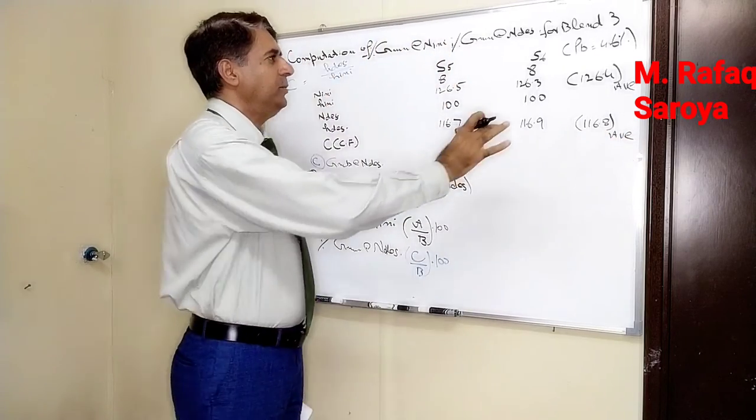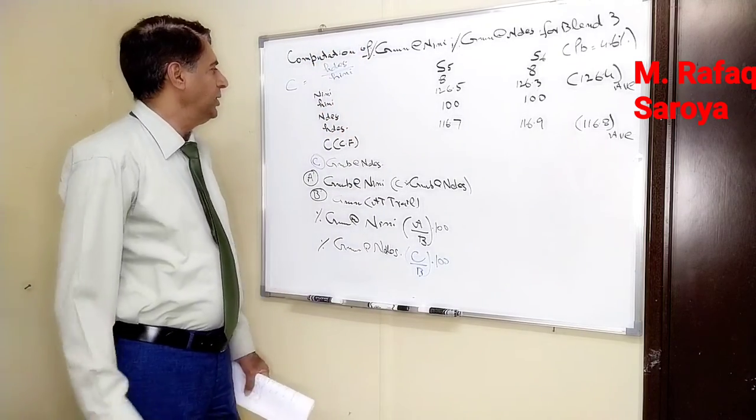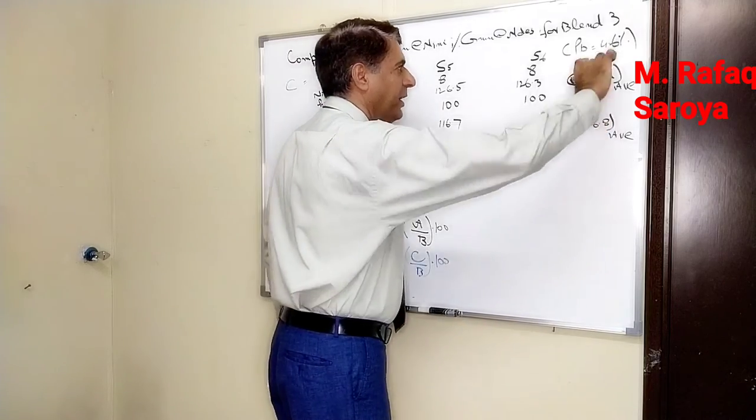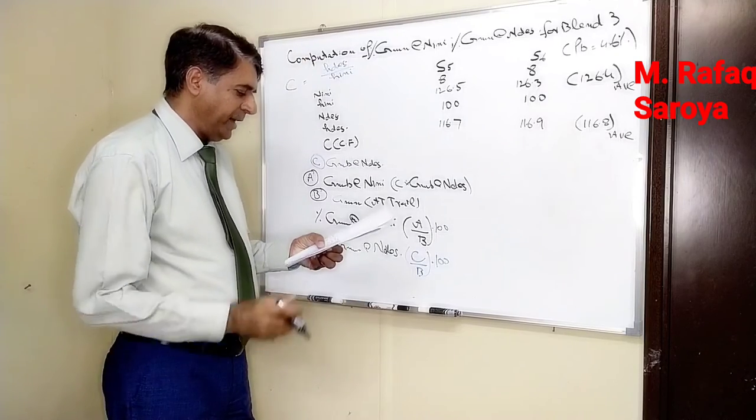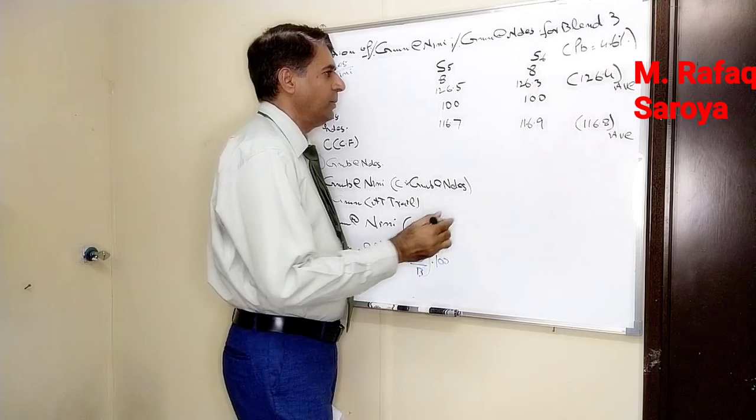Now we know these two values, and by using these two values we have to find out the value of correction factor. This divided by this is going to give us this correction factor, and this correction factor comes out to be 0.92.